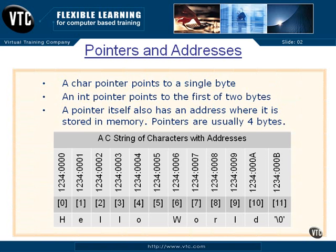When we create pointers, we make them point to different kinds of things. A character pointer points to a single byte of memory, enough to contain a character. An integer pointer points to the first of two bytes of memory.